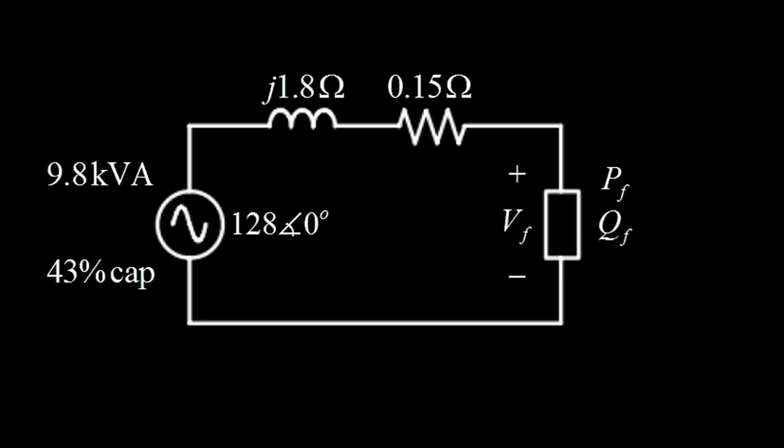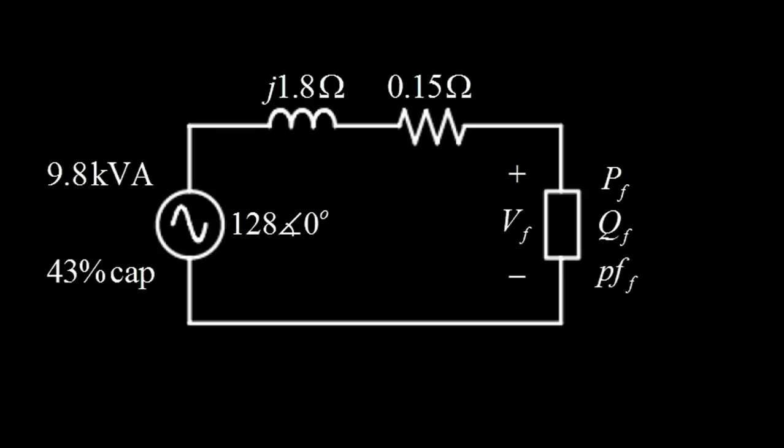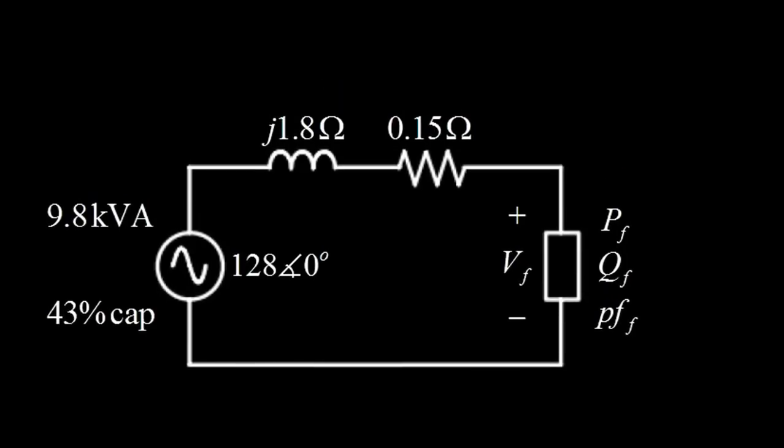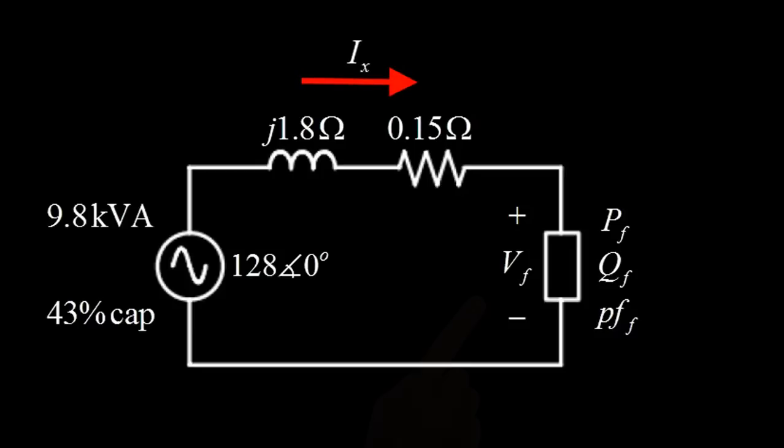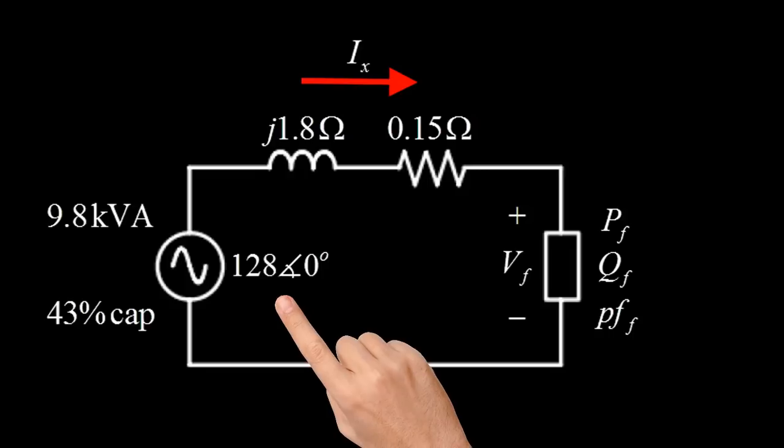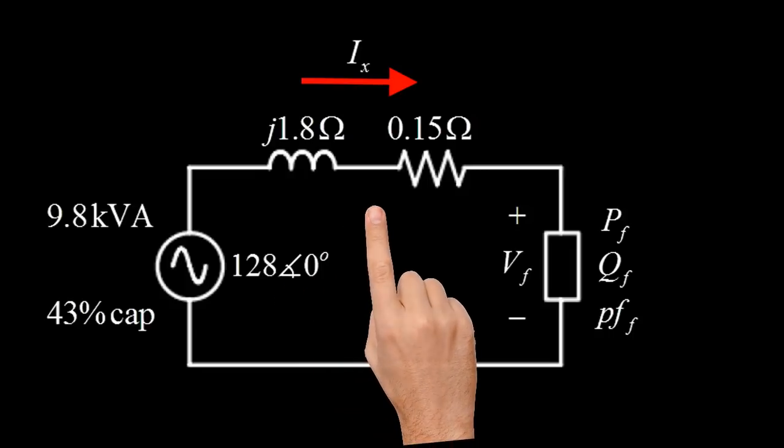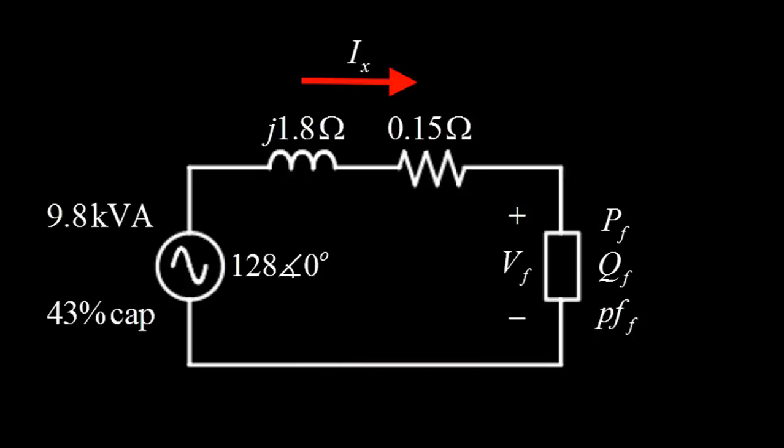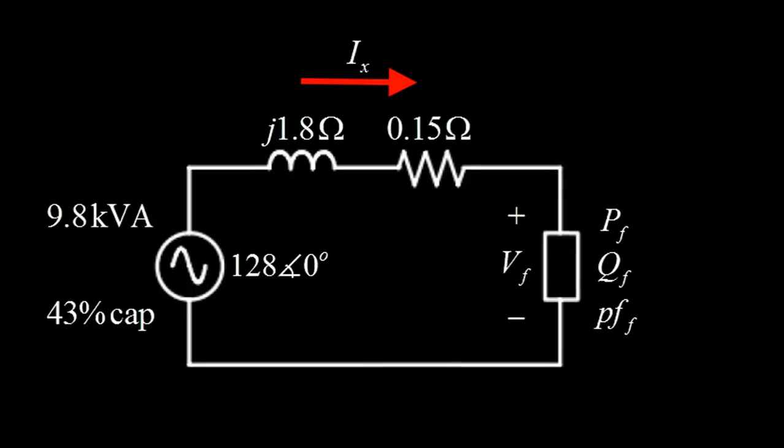If I only had the current in the circuit, it would be easy to find Vf. Vf would be the voltage of the source minus the drop in the cable. And with that voltage Vf and that current, I could compute Pf, Qf, and the power factor.